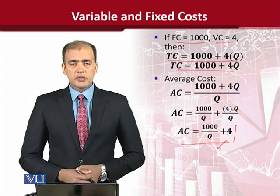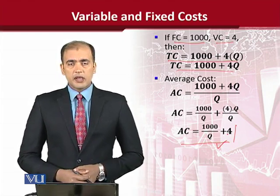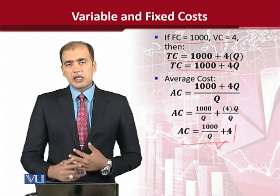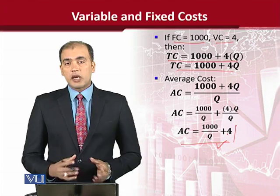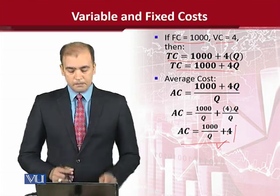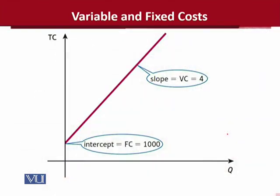AC stands for average cost. So this is how we can calculate average cost, at least mathematically. But we are not just concerned with the mathematical way — we can also depict it in the form of a diagram. We are going to decompose the cost into fixed cost and variable cost in a diagrammatical fashion.